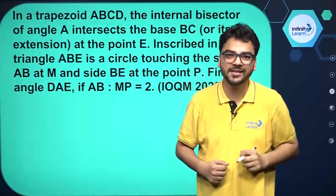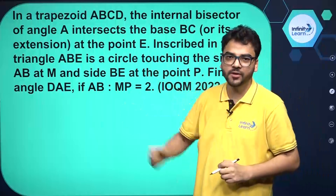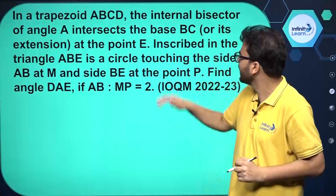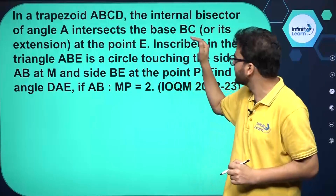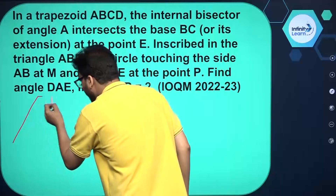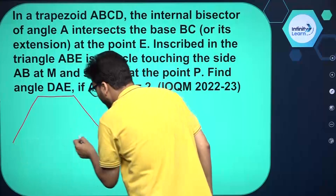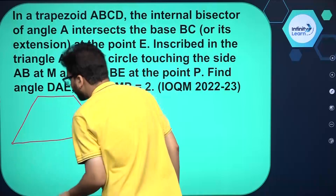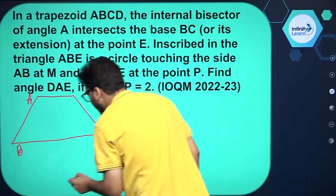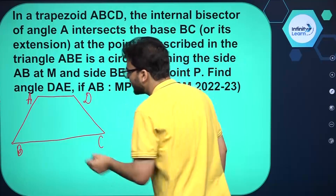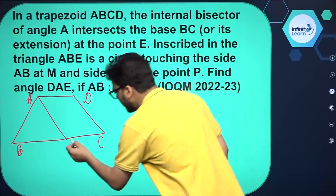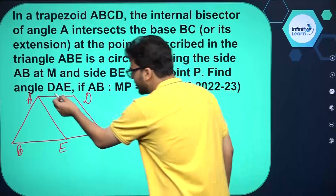Let's first make the figure according to the given question. We have a trapezoid ABCD — the internal bisector of angle A intersects the base BC at point E. So we construct the bisector meeting BC at point E.